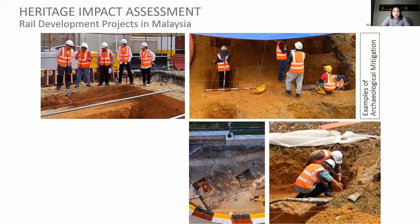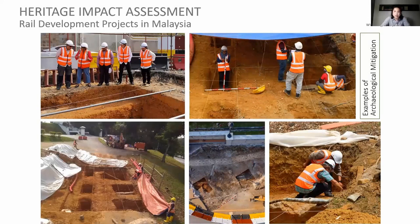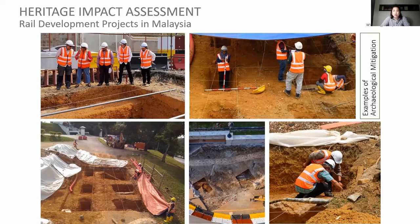As an example of archaeological mitigation, we did a trial trench before excavation. We opened up a few trenches, found no significant structure, and the project could proceed. This is a case from another alignment that was passing the site of an archaeological area. So this whole HIA study takes multiple phases: first we carry out the study, then before construction there is another stage, and during construction a conservator or archaeologist comes in for monitoring.